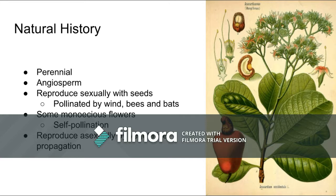Cashew trees are perennial angiosperms that reproduce sexually and asexually. If reproducing sexually with seeds, they rely on wind, bees, and bats to pollinate them. Cashews are also capable of self-pollination because they have some monoecious flowers. If reproducing asexually by vegetative propagation, you're more likely to get the desired traits than those from seeds.